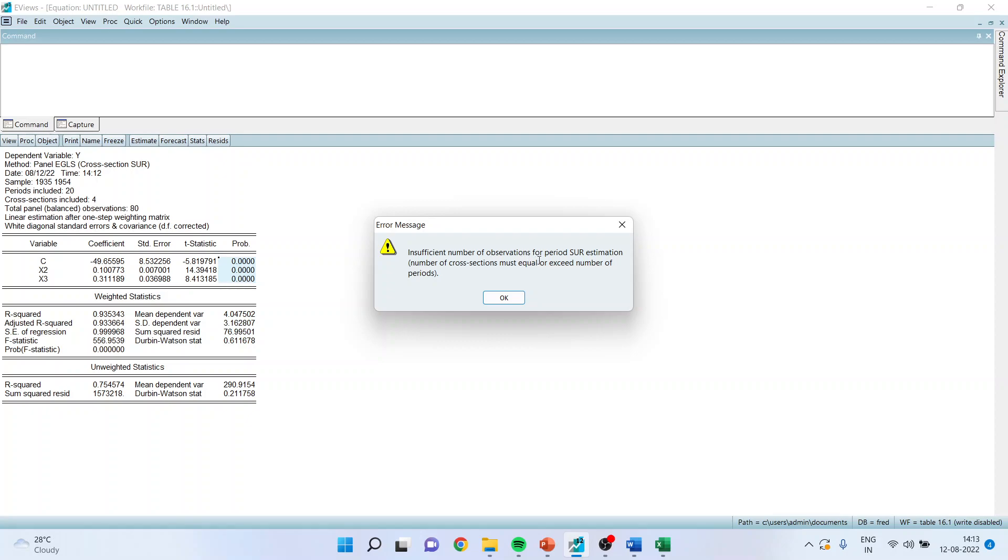Insufficient number of observations for period SUR estimation. The number of cross-sections must be equal or exceed the number of periods. So that's an error message which I am getting. OK.